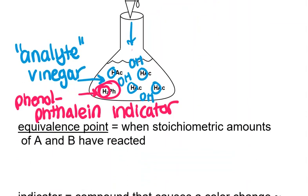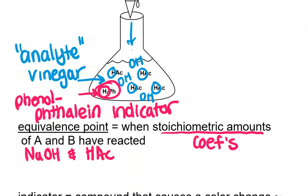So the equivalence point is when stoichiometric amounts, when we say stoichiometric amounts, that means according to the coefficients of the balanced chemical equation of A and B have reacted. And in our case, our A and B, we're talking about stoichiometric amounts of sodium hydroxide and acetic acid. The reaction has a one-to-one ratio in this case. And so that allows us, at the equivalence point, we're going to say that moles of sodium hydroxide equals the moles of acetic acid.